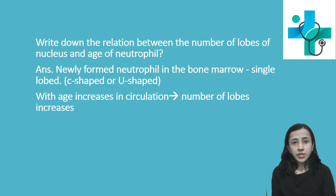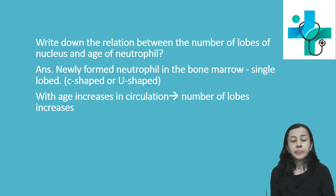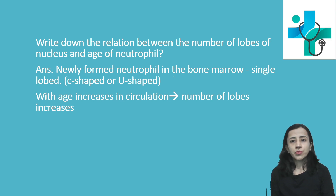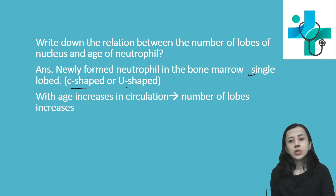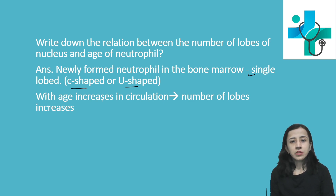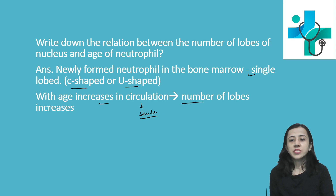The relation between the number of lobes of the nucleus of the neutrophil and the age of the neutrophil: a newly formed neutrophil in the bone marrow has a single lobe, either C-shaped or U-shaped. As the age increases in circulation — when the neutrophil becomes senile and old — the number of lobes increases.